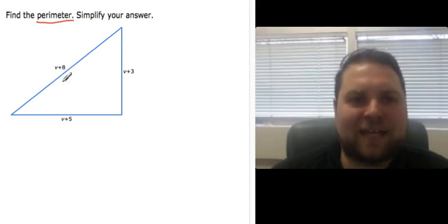So the way we do this is by adding up the length of all the sides. And these numbers you see right here represent the length of each side. So v plus 8 represents that length, v plus 5 represents that length, v plus 3 that length, so on and so forth. So if I want to find the perimeter, all I have to do is add these three together.